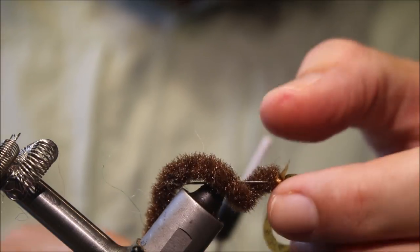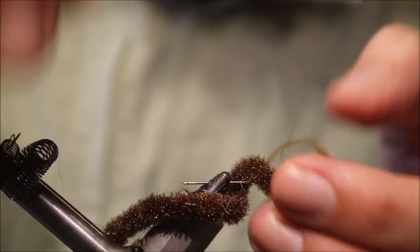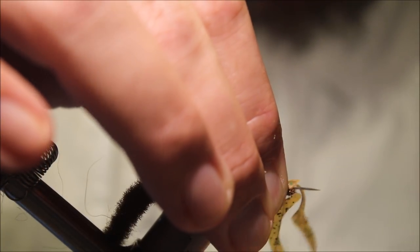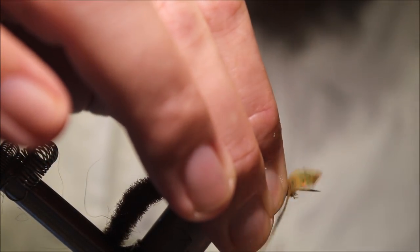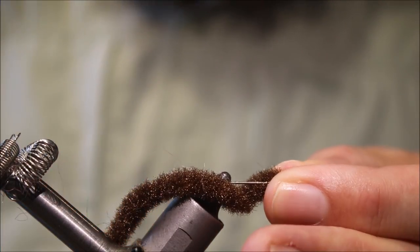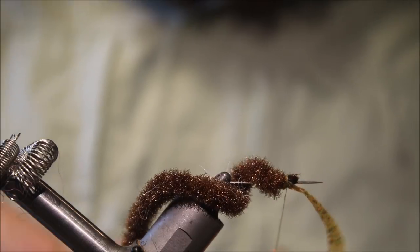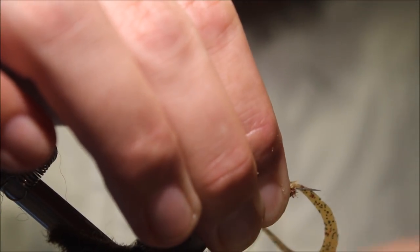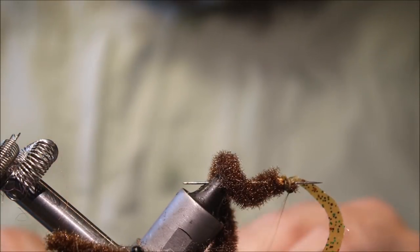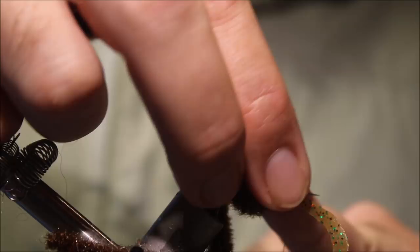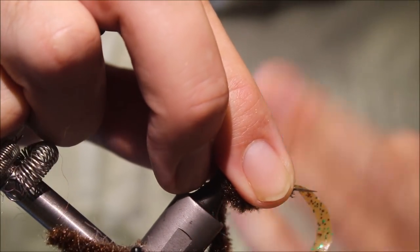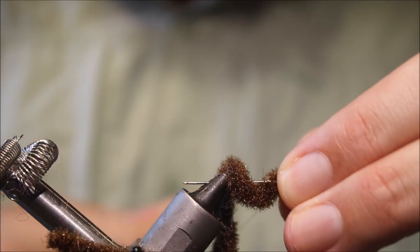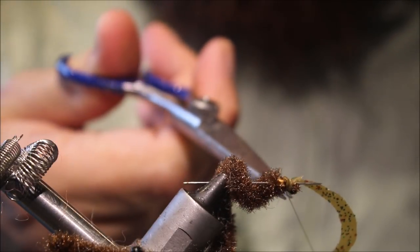And I just fold the tag back, tie over it. Right, I don't bother trimming this tag off, I just fold it back, tie it down, two or three wraps. You need to use your finger there just to stabilize that as you pull your thread off your bobbin. And then whip finish, trim off the waste.